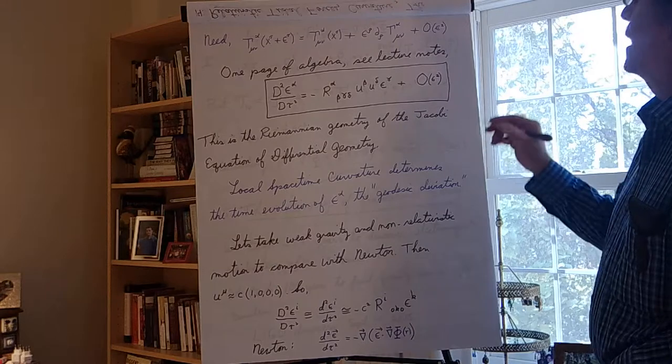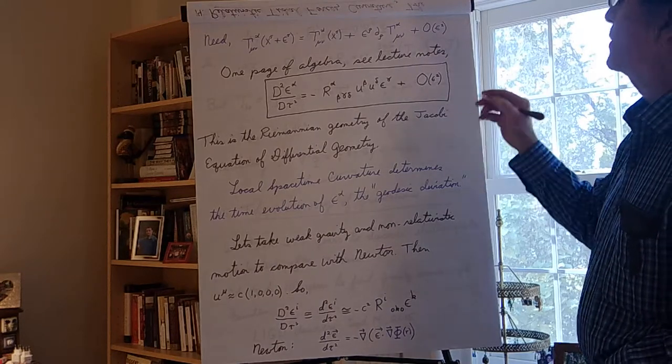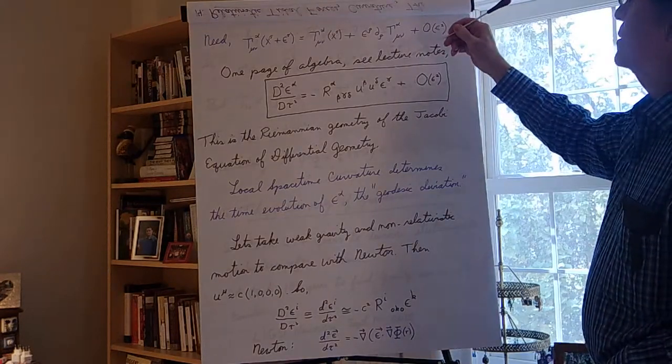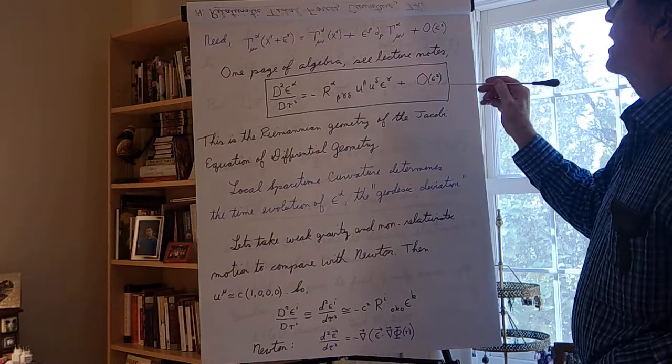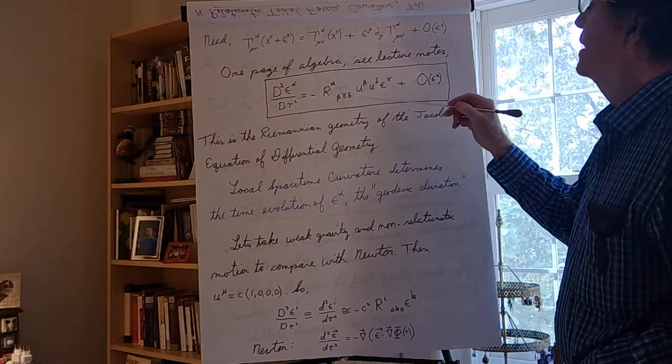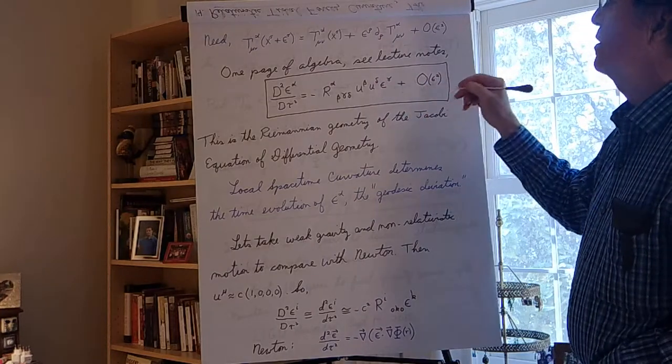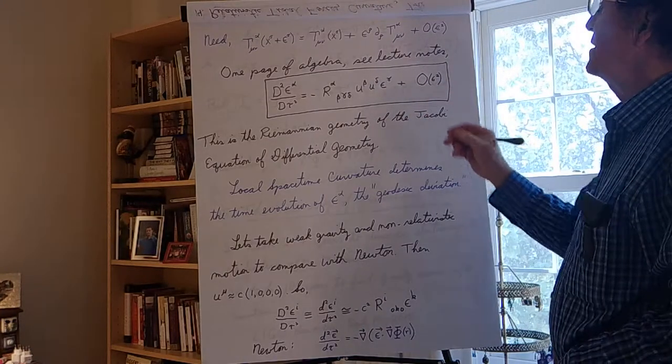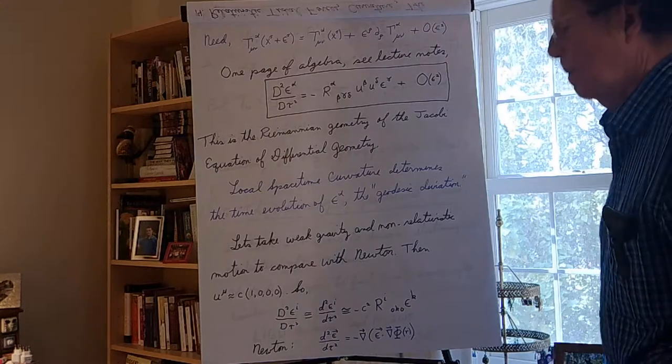I use the fact that my particles are traveling on geodesics. Collect up everything. It's clear I'm going to get gradients of Christoffel symbols in certain combinations. It's clear that I'm going to get as well Christoffel symbols to the second order squared, and I have to collect all that up. And it's not all that terribly difficult.